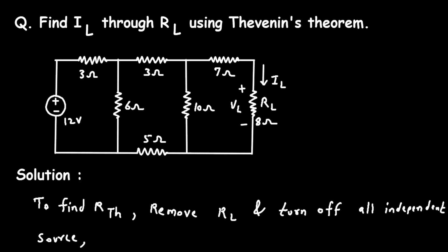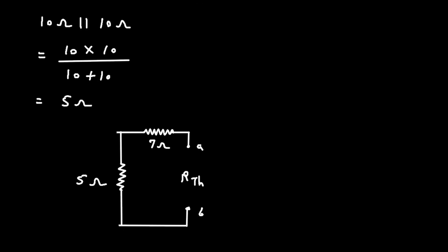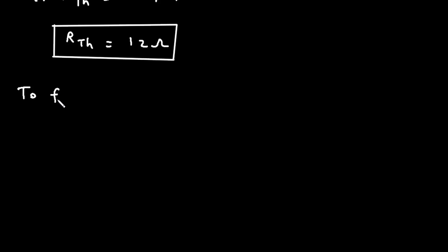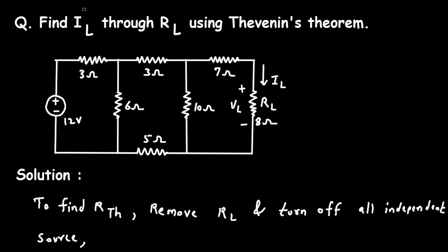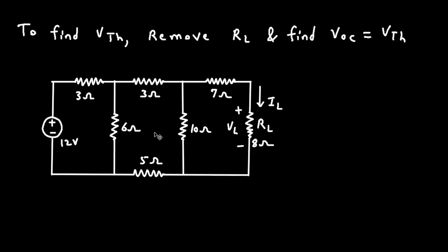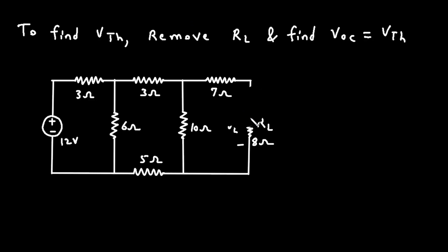Now we have the value of RTH. Next, we have to find the value of Thevenin's voltage VTH. To find VTH, we remove RL and find VOC, which equals VTH — VOC is the open circuit voltage. We remove RL, and this open circuit voltage will be our VTH. Here we can see this 7 Ohm is open circuited, so there will be no current through it, and this voltage will be our VTH.